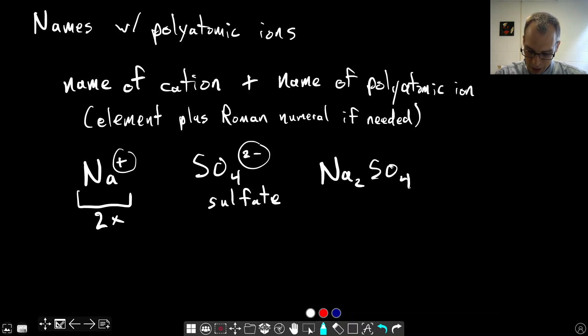Now how do we name this? We use the name of the cation, sodium. We don't need Roman numerals for sodium because it's always a plus one charge, since it's in the first column of the periodic table. Then we just use the name of the anion, which is that polyatomic ion - something you'll have to memorize. So it's sodium sulfate, done. We don't have to specify that there were two sodiums because you can figure that out from the charges. You can go back and forth between this name and this formula using these rules.